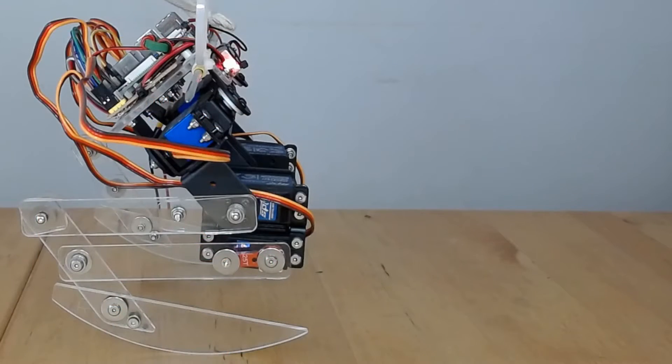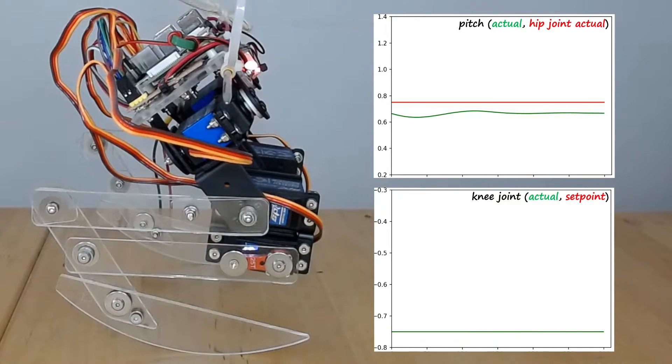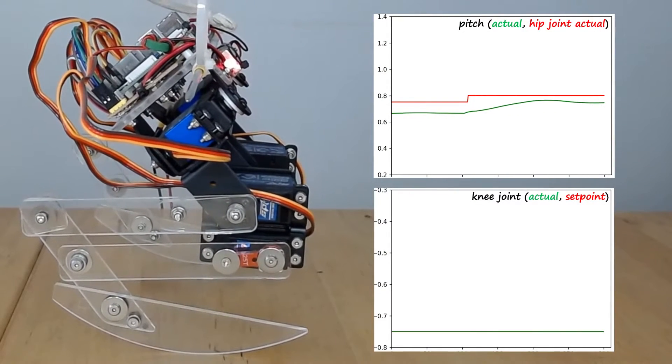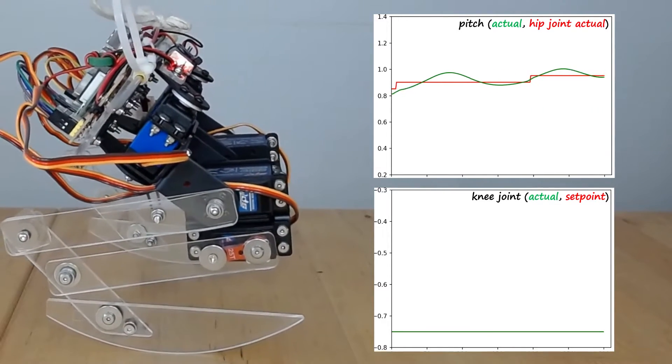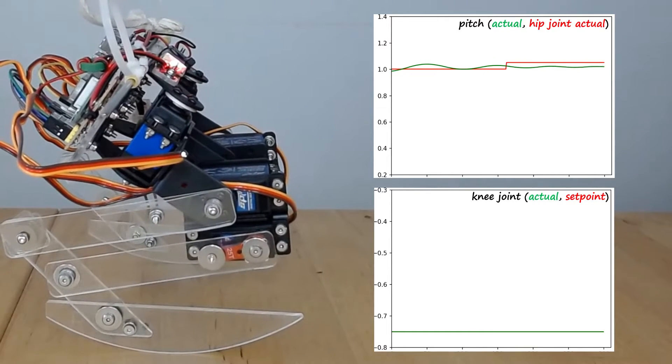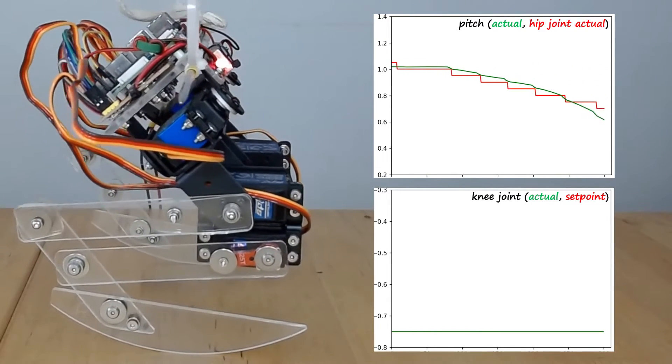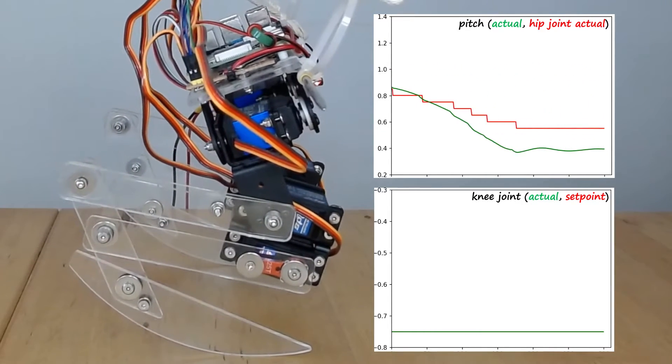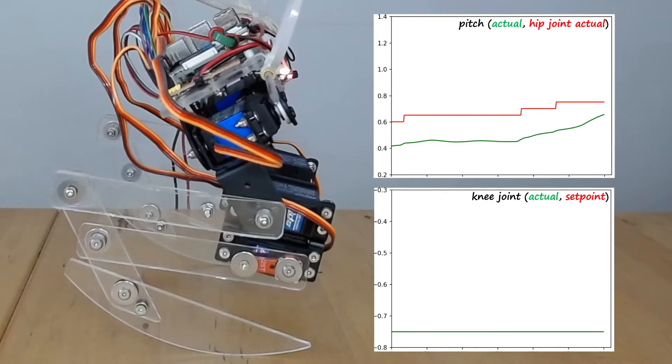So how did things go? Well, firstly, a baseline. Let's see how the legs perform when I manually control things. On the right, you can see some of the data from the legs. The top image shows the measured pitch angle of the torso, as well as the actual position of the hip. The lower image shows the knee position. At a low knee height, the legs are reasonably stable by themselves.